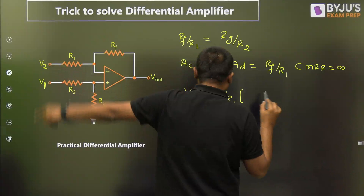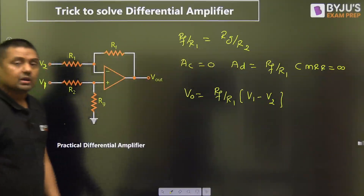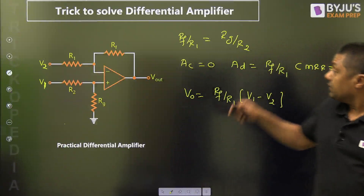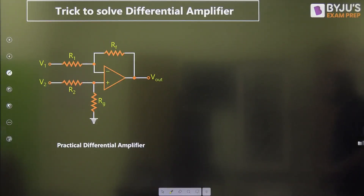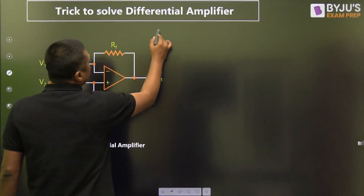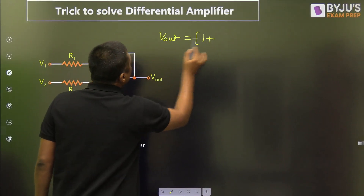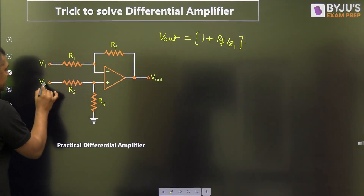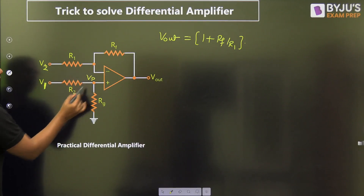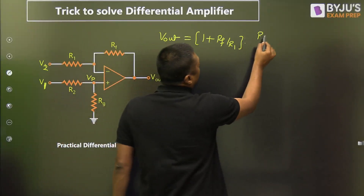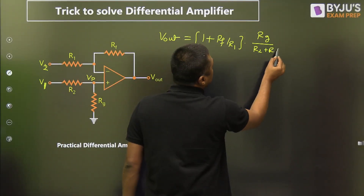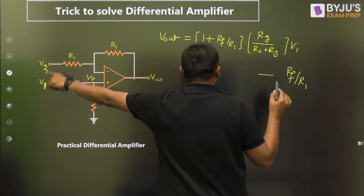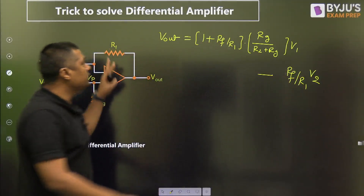and CMRR becomes infinite. The output V0 equals RF/R1 multiplied by (non-inverting terminal voltage minus inverting terminal voltage). If this ratio is not matched, then you must write: V_out equals (1 + RF/R1) — the gain of the non-inverting op-amp — multiplied by VP, where VP equals RG/(R2 + RG) into V1, minus (RF/R1) into V2. That is the output when the balanced condition is not satisfied.